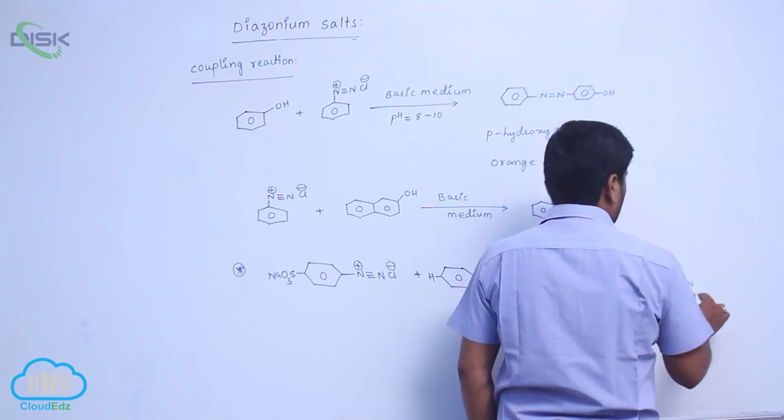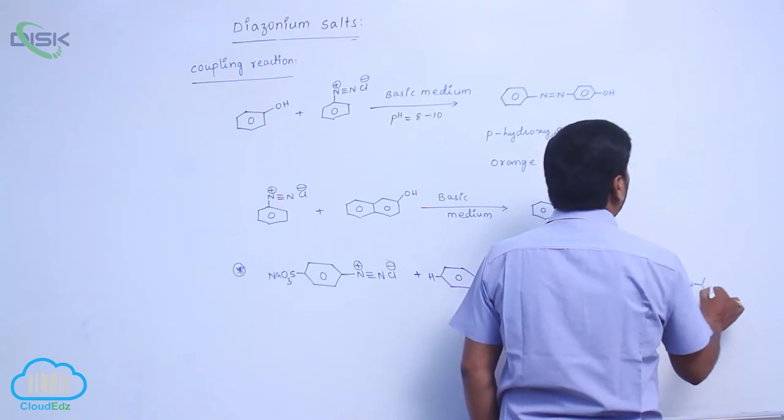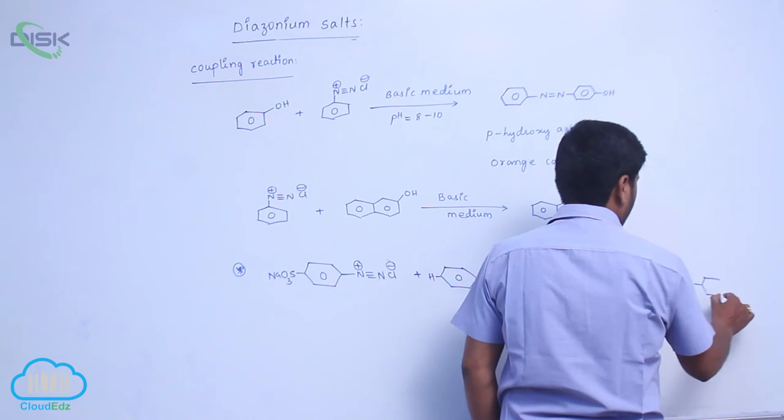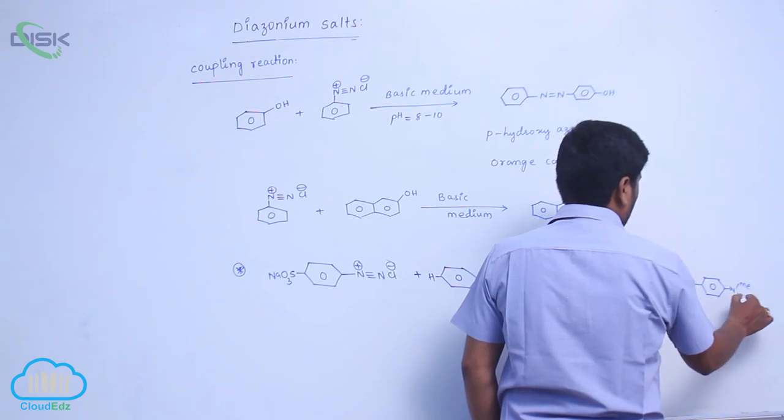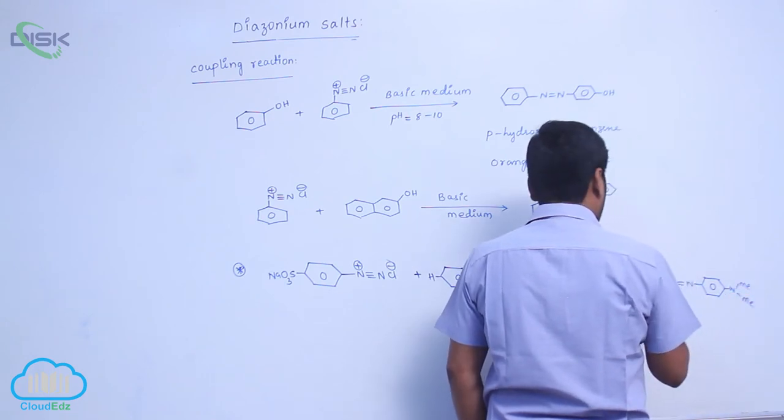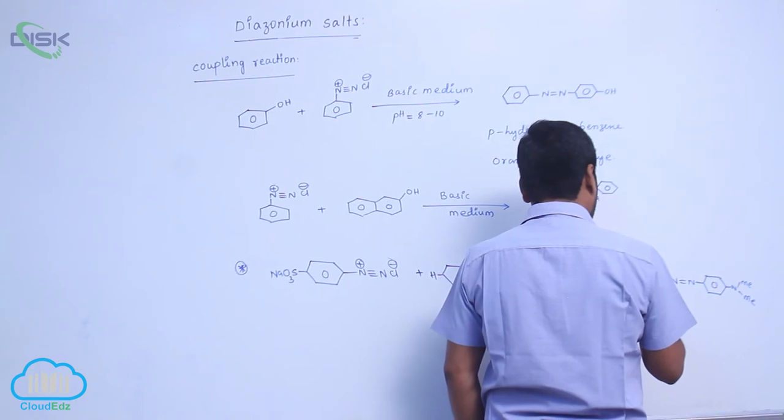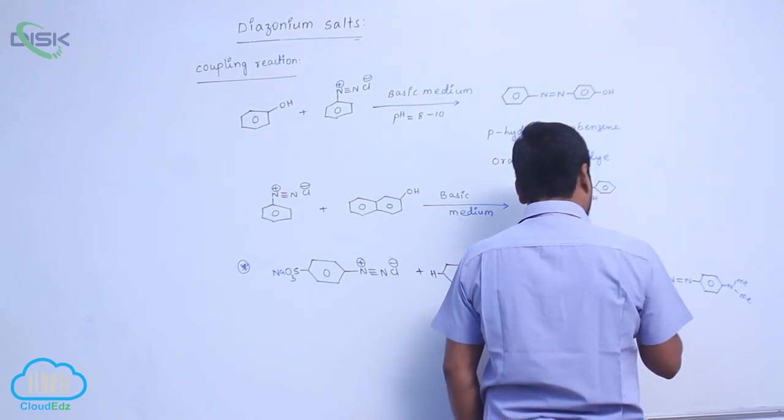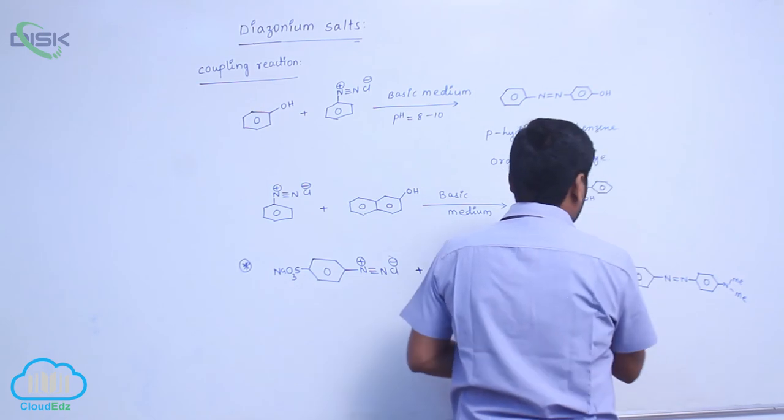N=N, nitrogen with methyl groups, then SO3Na.